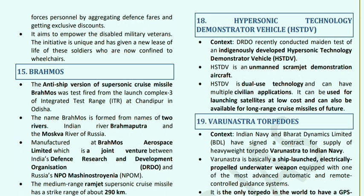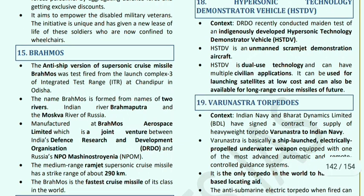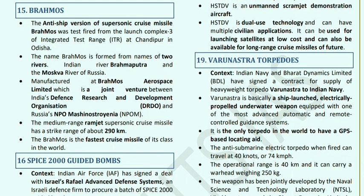BrahMos: an anti-ship version of the BrahMos supersonic cruise missile was test-fired from Launch Complex 3 of the Integrated Test Range at Chandipur in Odisha. The name BrahMos comes from two rivers: the Brahmaputra and the Moskva River of Russia. It is manufactured at BrahMos Aerospace Limited, a joint venture between DRDO and Russia's NPO Mashinostroyeniya. It is a medium-range ramjet supersonic cruise missile with a strike range of 290 km — the fastest cruise missile in its class.